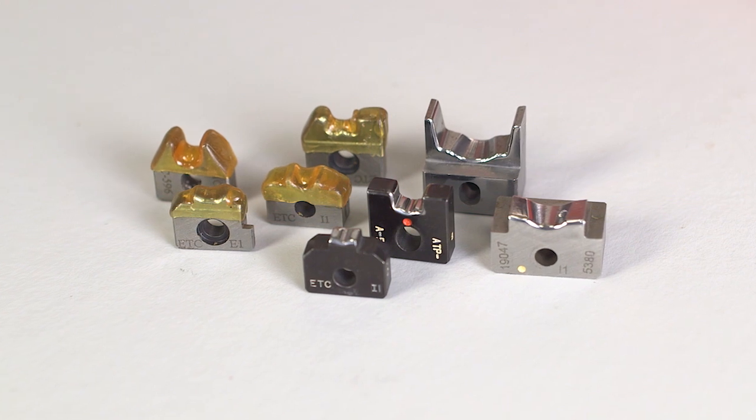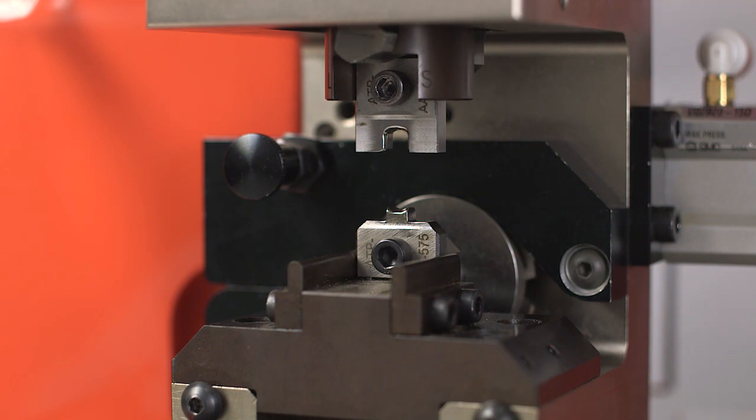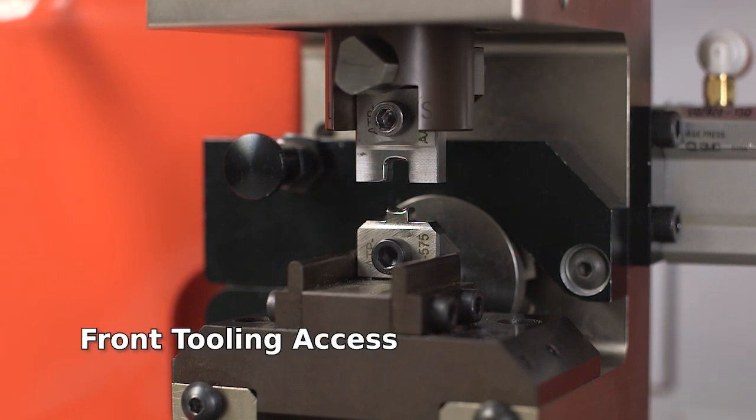The crimp module uses quick-change tooling, accessed from the front of the module to simplify changeover.